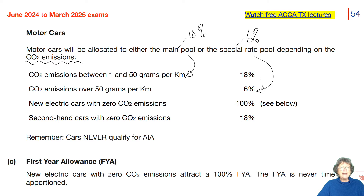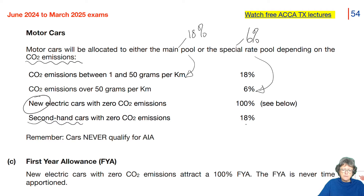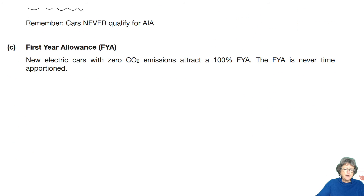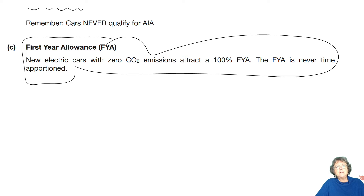New electric cars get 100%, because obviously they're trying to incentivize you to buy them. So if you buy a new electric car, you get the write-off of the complete expense in one go. If it's second-hand, it goes in the main pool. Cars never qualify for AIA. This is your first-year allowance. A first-year allowance is what it says — and it's the only one that is never time apportioned.